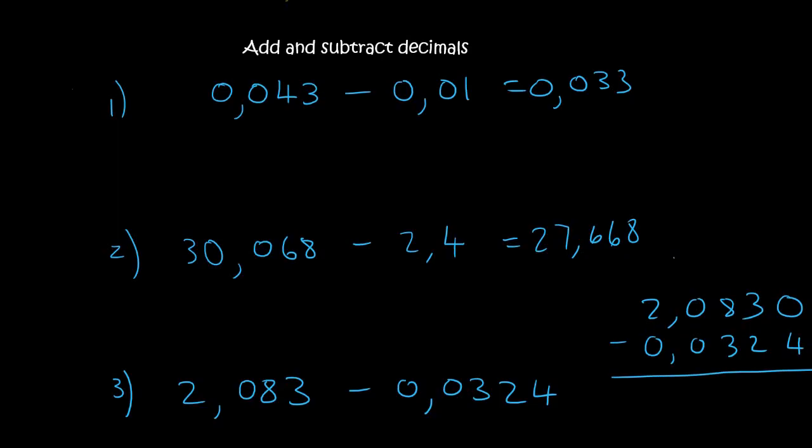So 0 minus 4 you can't. So you borrow this one, so it becomes a 2. Now we have 10 minus 4, which is 6. 2 minus 2 is 0. 8 minus 3 is 5. 0 minus 0 is 0. Put the comma. 2 minus 0 is 2. 2 comma 0, 5, 0, 6.